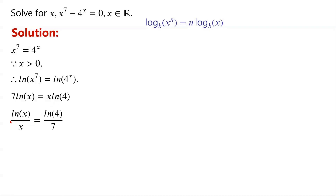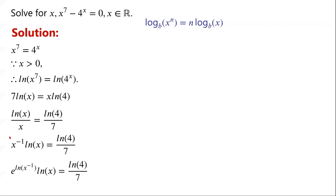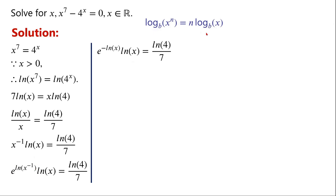By rearranging the equation, we can write ln x over x equals ln 4 over 7. Now, 1 over x can be written as x to the power of minus 1, which can be written as e to the power of ln of x to the power of minus 1. Applying this formula, that equals e to the power of minus ln x. Here we have minus ln x, and here we have ln x, so we multiply the equation by minus 1.